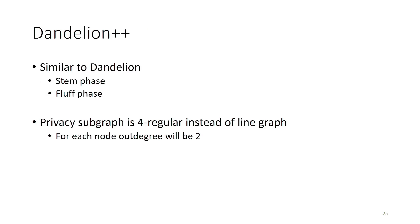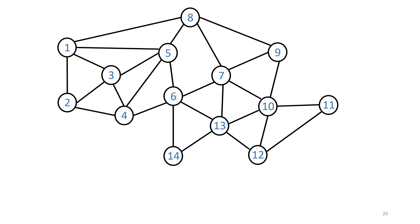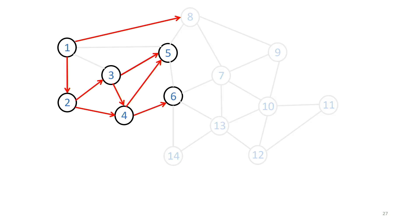Dandelion's successor was Dandelion++. Its functioning is very similar — it has a stem phase and a fluff phase — but with respect to the privacy subgraph, it is not a line graph but instead a four-regular graph. Each node has two outgoing potential connections in the privacy subgraph. If we have to calculate the probability for, say, node 1 reaching an adversary node, we need to consider multiple paths, since unlike a line graph there can be multiple routes to the adversary.